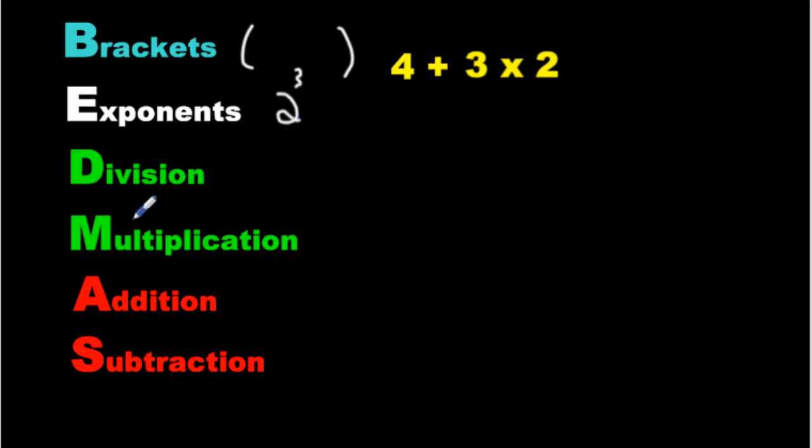Division and multiplication, since they're the same color, you have to do them next, but in the order that they appear. So you look at the equation left to right. If division comes first, you do it first. If multiplication comes first, you do that first. So just because the D is ahead of the M, that doesn't mean you do division before multiplication. You just do them in the order that they appear left to right.